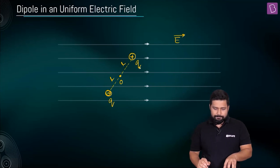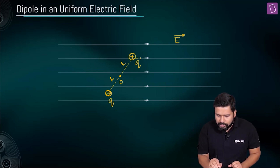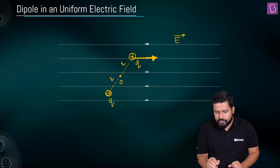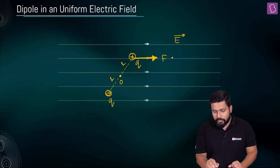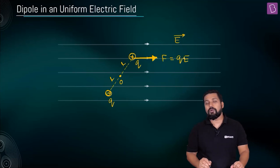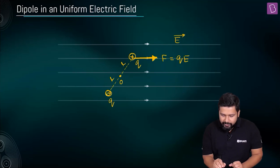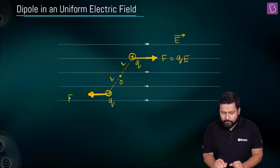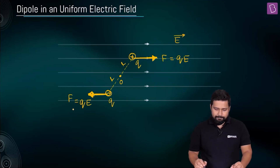First, let us talk about the force. The force on plus q is always going to be along the direction of the field. If you place a positive charge in the electric field, the force you are going to experience will be along the direction of the field, and the magnitude of the force is going to be equal to qE. What about the negative charge? It will be opposite to the direction of the field, and the magnitude of the force is going to be equal to qE as well.